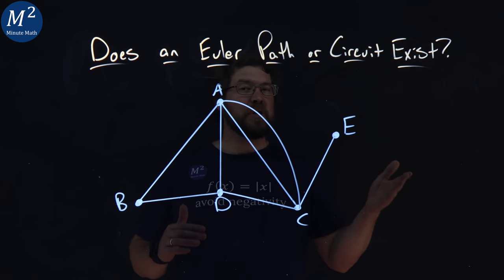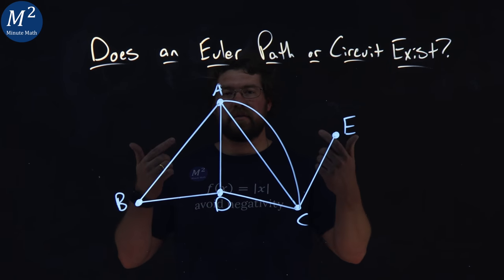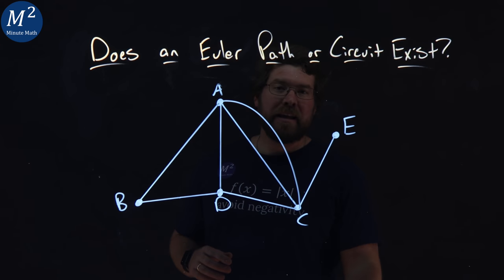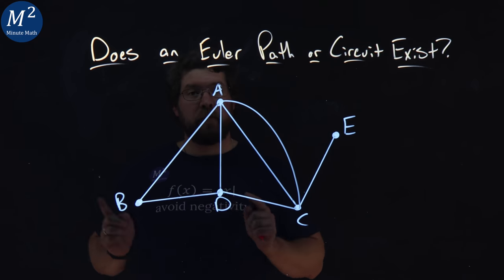Does an Euler path or circuit exist on this graph? So to understand this, I need to know the degree of every single vertice.